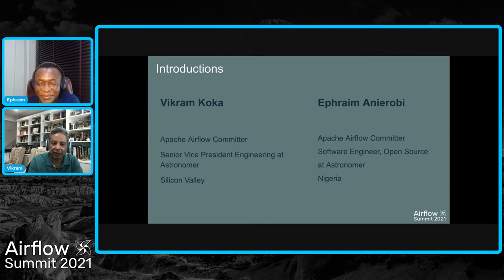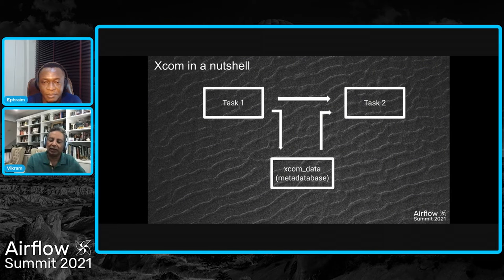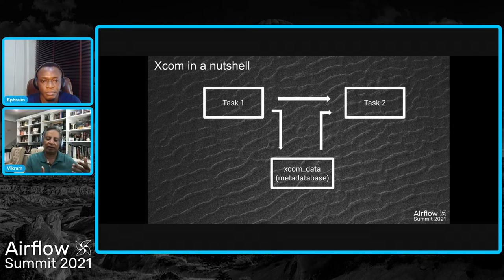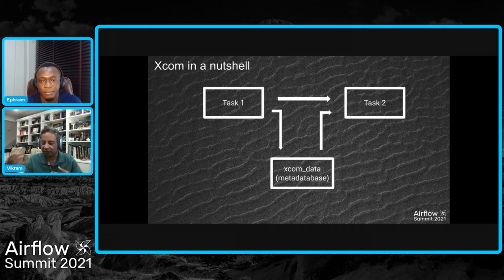Getting on with our talk, what we wanted to chat with you folks about is XCOM. XCOM in a nutshell is about transferring data between one task to another, between DAGs within Airflow. What you're probably seeing in Airflow is a relationship between a preceding task — in this case called task one — and a succeeding task, task two. In the graph, you can see there's a line between them and task one precedes task two.